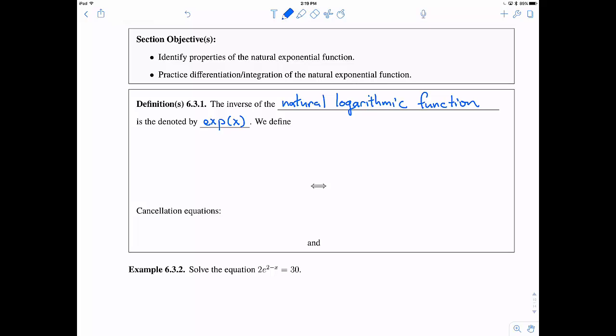Another way we write that is sometimes just e to the x. You may have seen this more often in your previous math classes, and this thing has a nice property. Because it's the inverse, the way that we define this is that e^x is equal to y if and only if the natural log of y is equal to x. That's how inverses are defined. There's this interchanging of the x and the y sort of deal.